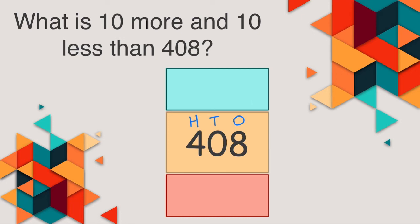What is 10 more and 10 less than 408? 10 more than 408 is easy. We only add 1 to the tens digit. So it's 1 here. The hundreds digit and the ones digit remain the same. Now, when we want to do 10 less than 408, if we look at just 1 digit at the tens digit, it's a 0.